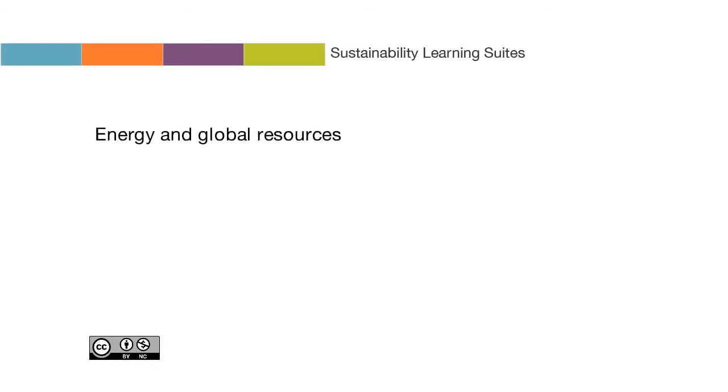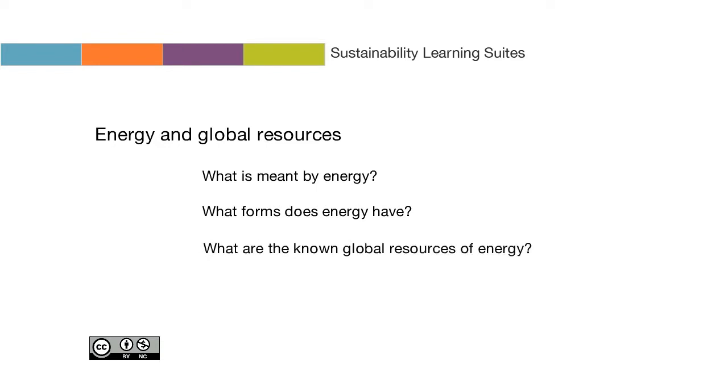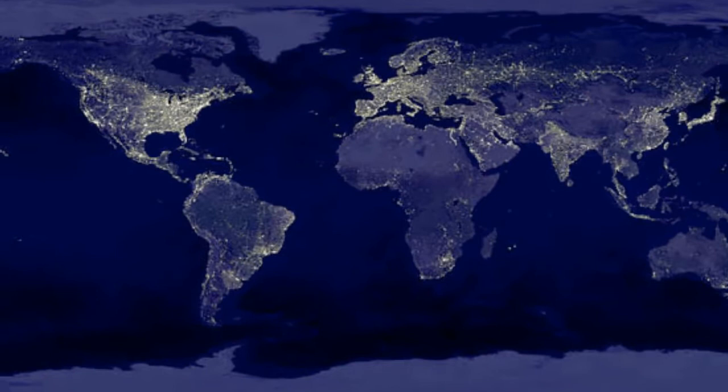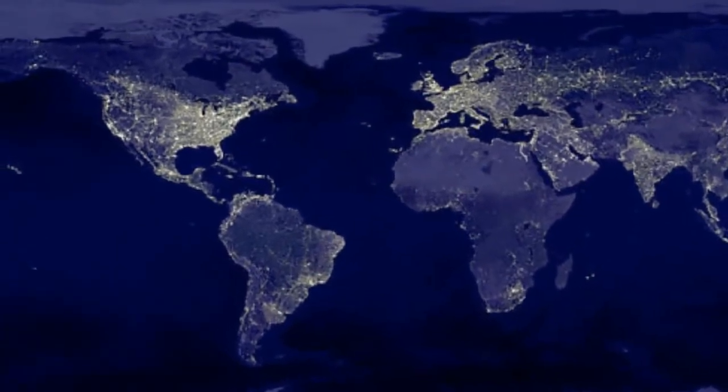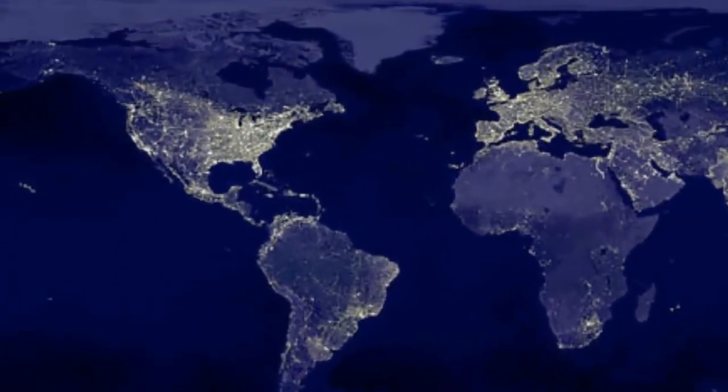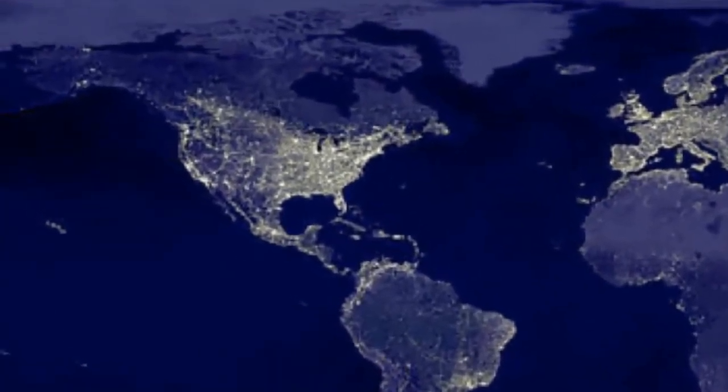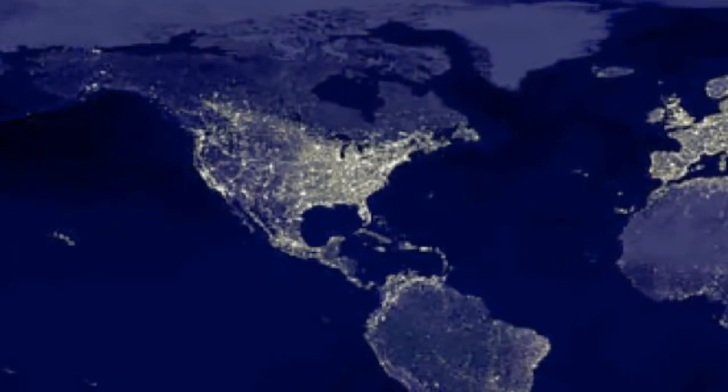Energy and global resources. In this video we'll cover what is meant by energy, what forms does energy have, and what are the known global resources. This image, which is actually a composite of hundreds of images taken by orbiting satellites, depicts the use of artificial light at night. It was taken on November 27th, 2000.